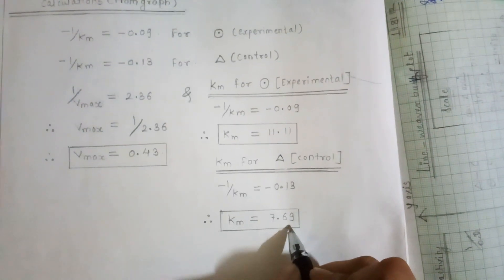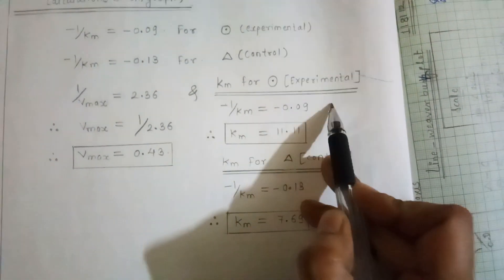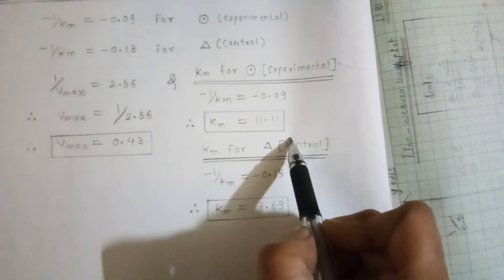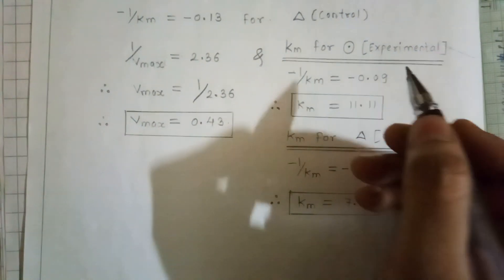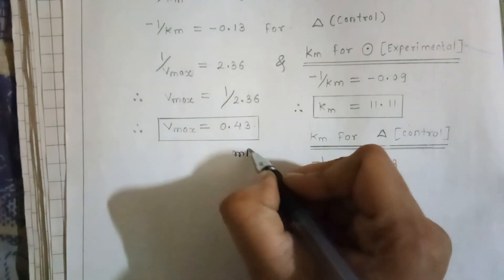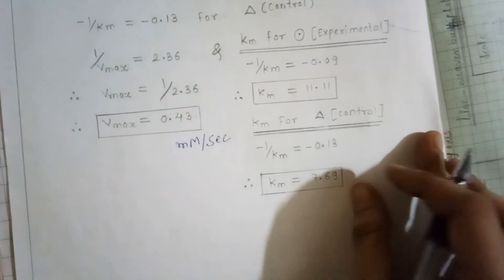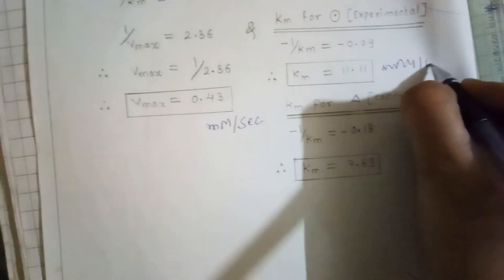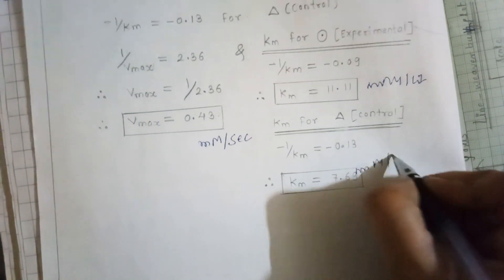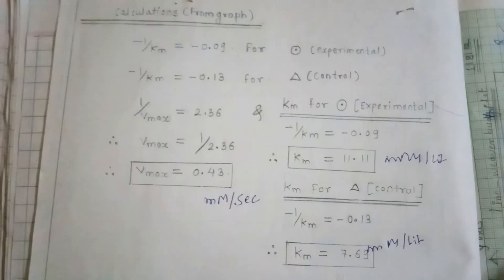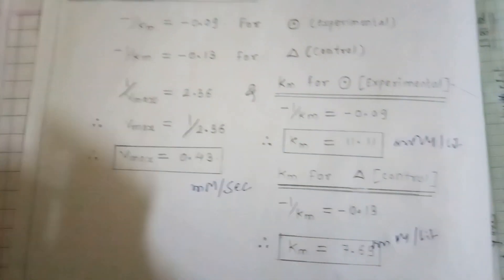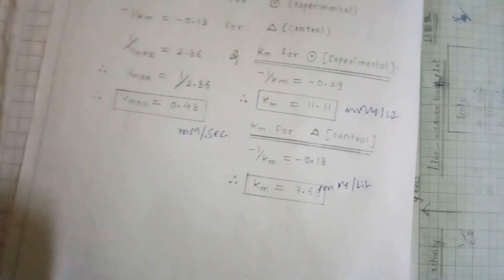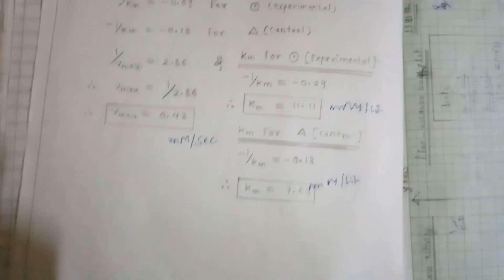Hence it is proved that in the presence of competitive inhibitor, the Km value increases. In the presence of inhibitor, the Vmax was the same, as shown by the intersection of the two lines on the Lineweaver-Burk plot. Hence it is proved that in the presence of competitive inhibitor, the affinity between enzyme and substrate is reduced, Km increases, and Vmax remains the same. By calculating the Lineweaver-Burk plot, we have proved this. Thank you so much and keep watching.